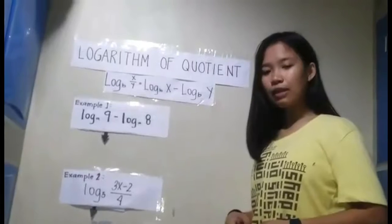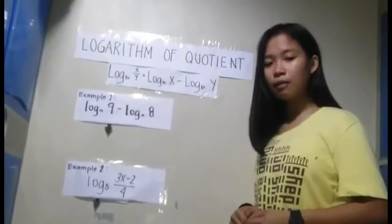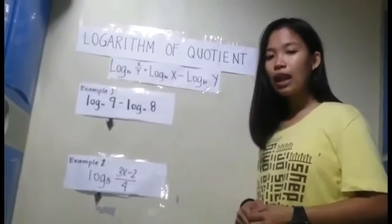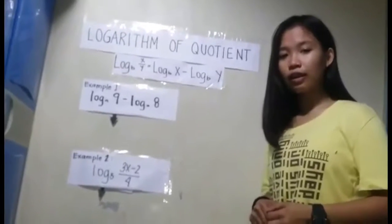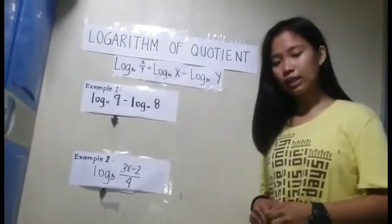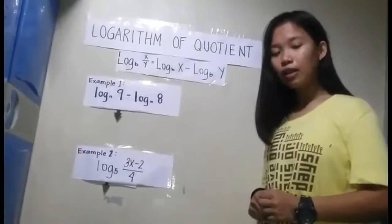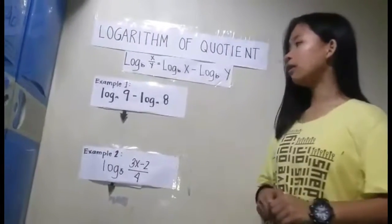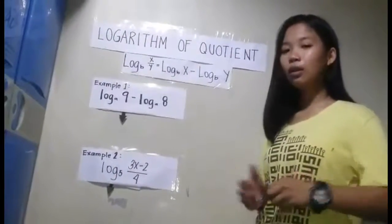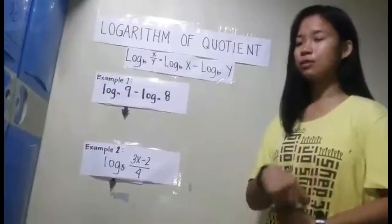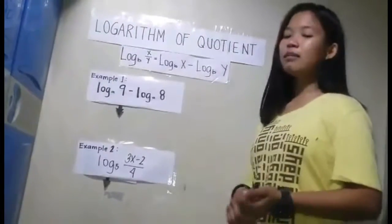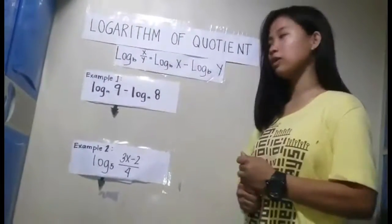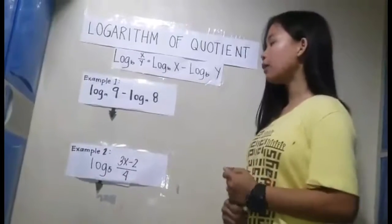The quotient rule basically means whatever is on top of the division, you subtract whatever is on the bottom. In the logarithm of quotient, we can go from subtraction to division, and division to subtraction. Here are some examples so you can better understand the law of quotient.